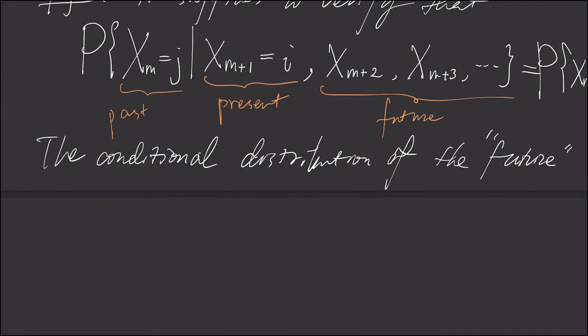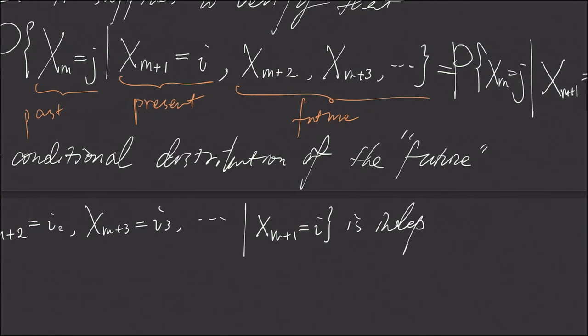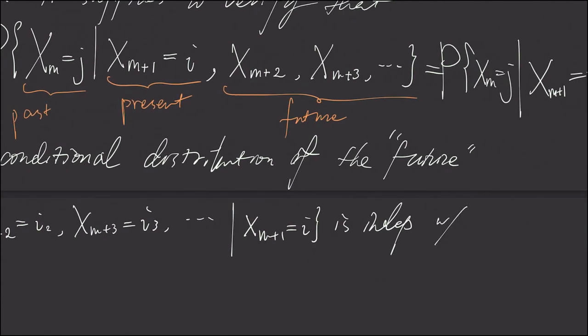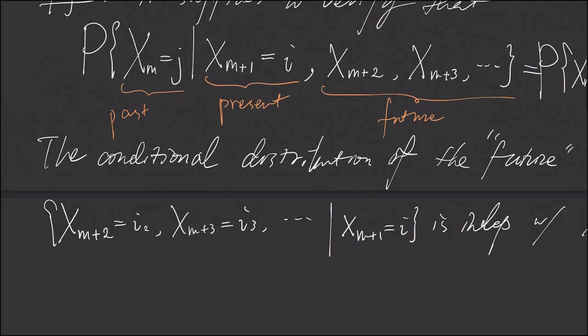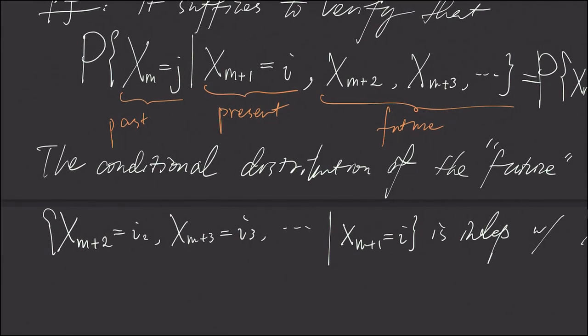For example, X sub M plus 2 is i2 and X sub M plus 3 is i3, given X sub M plus 1 is i, is independent with X sub M equals j, which is the past.